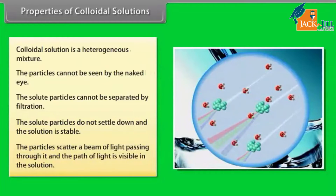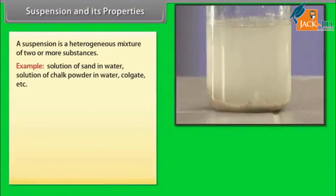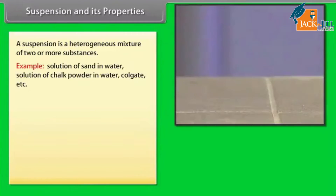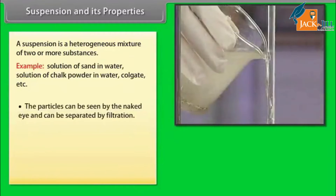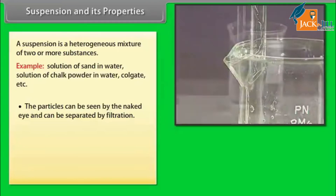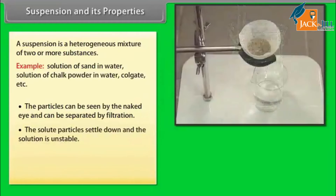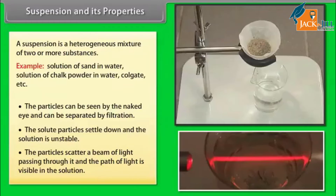Suspension and its properties: A suspension is a heterogeneous mixture of two or more substances. Examples include solution of sand in water, solution of chalk powder in water, and toothpaste. The particles can be seen by the naked eye and can be separated by filtration. The solute particles settle down and the solution is unstable. The particles scatter a beam of light and the path of light is visible in the solution.